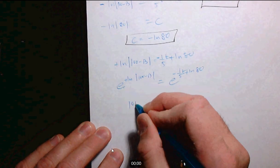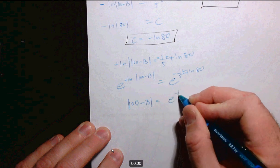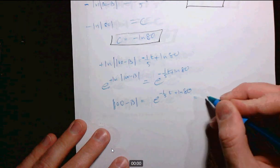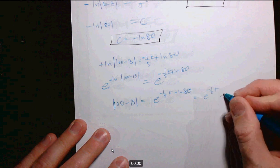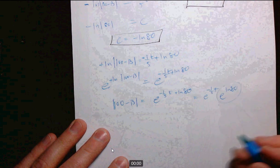This is e to the negative 1/5 T plus ln of 80. But notice that, of course, this is e to the negative 1/5 T times e to the ln of 80. That's the rule of exponents. And e to the ln of 80 is 80. So this is 80 e to the negative 1/5 T.